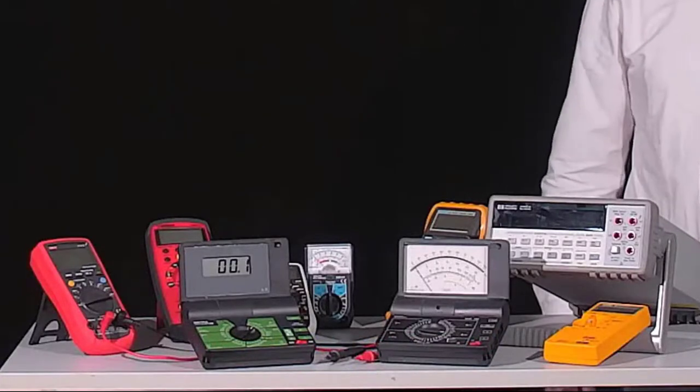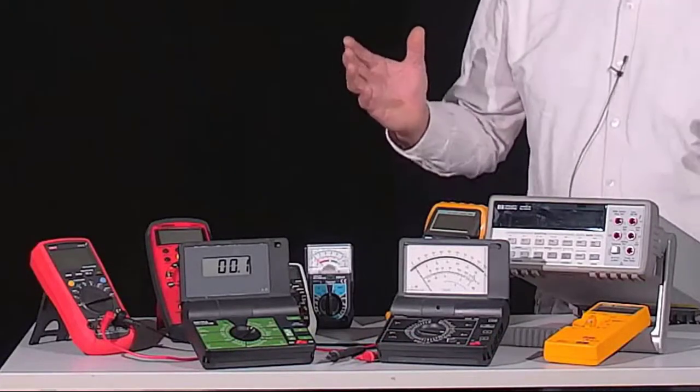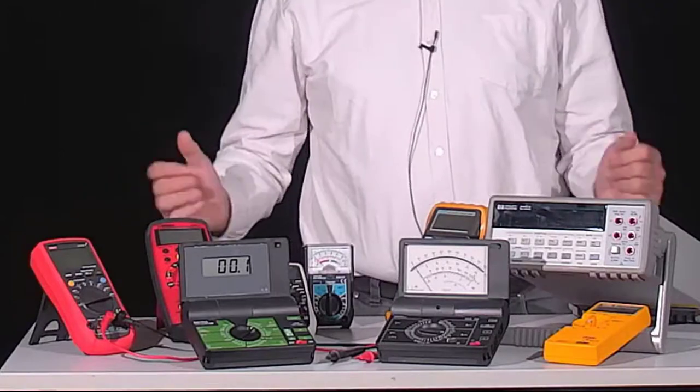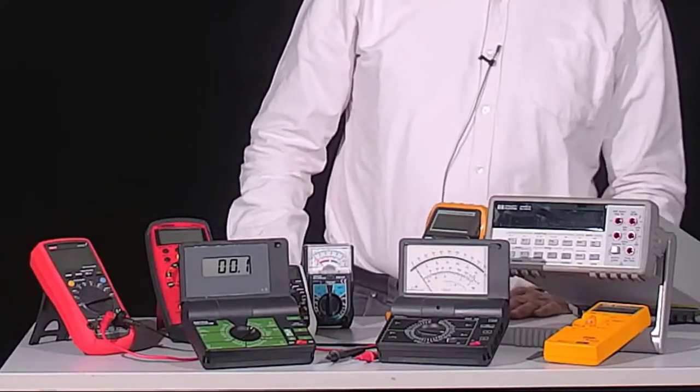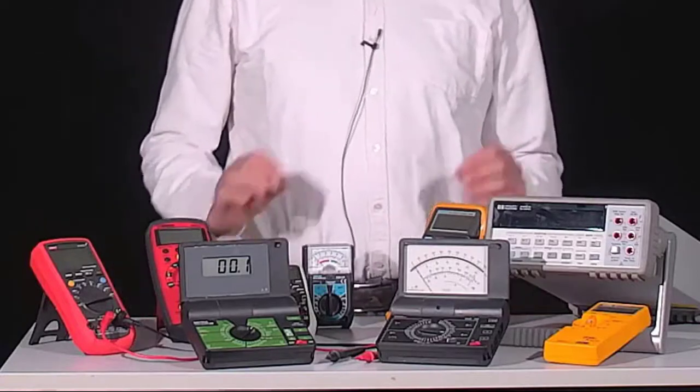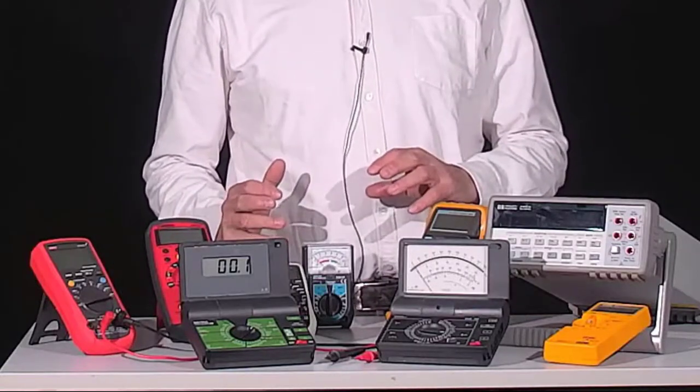For voltage and current measurement, measuring devices called multimeters are used in most cases in everyday laboratory work. These devices measure different quantities, such as electrical voltage or electrical current.